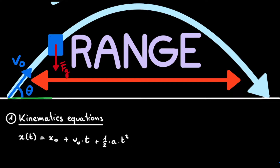The next step is to realize that we have two dimensions here. We have an x direction parallel to the earth's surface and a perpendicular y direction. Because we have two dimensions, we will also have two kinematics equations, one for each dimension. V₀ gets a superscript x to indicate that it is the initial velocity in the x direction, and the acceleration will also be the acceleration in the x direction.